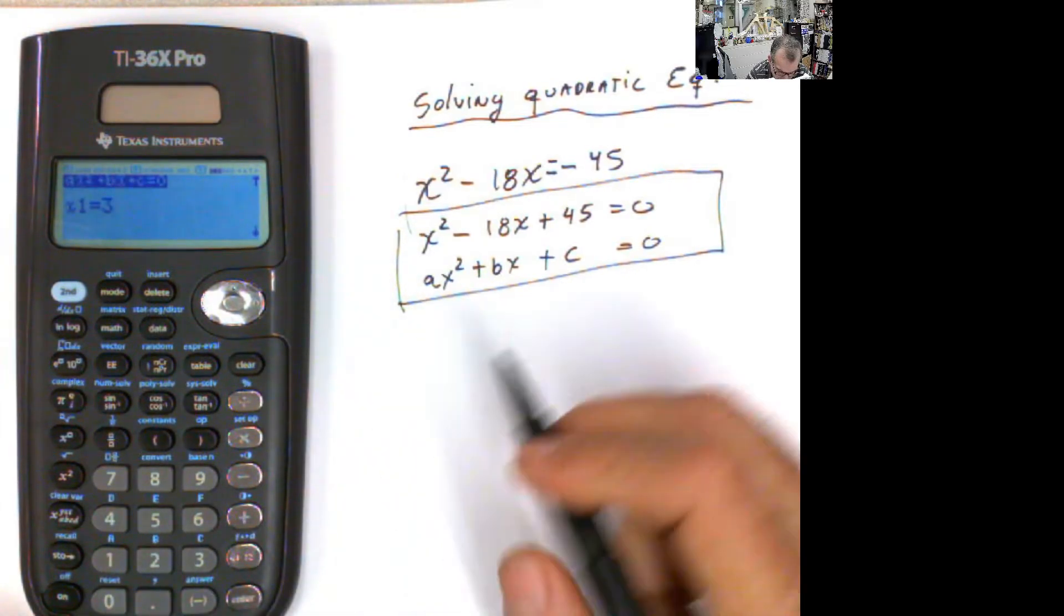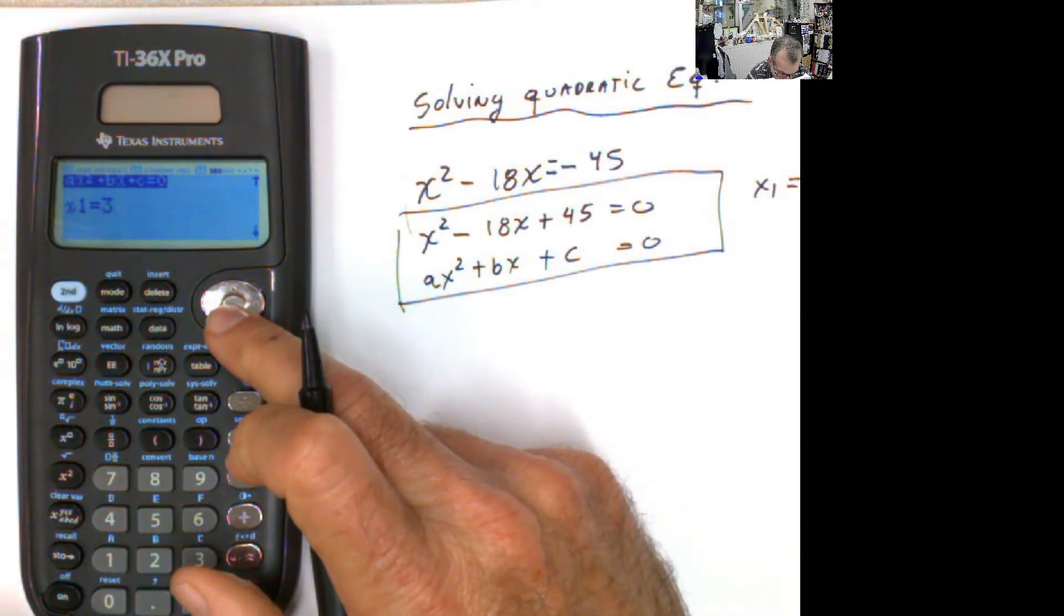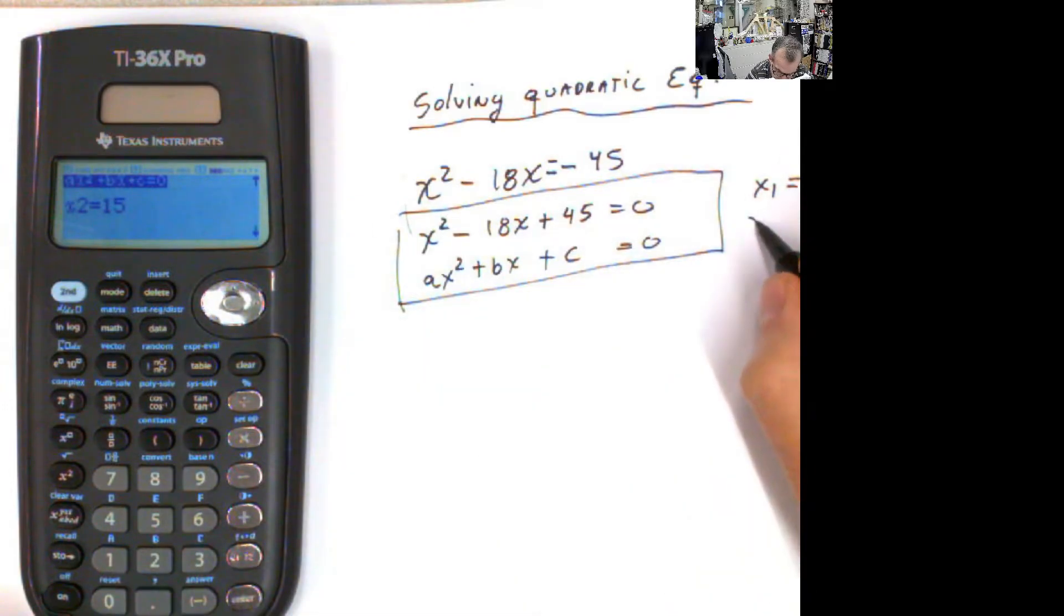And then you hit solve. So you get x1, the first root is 3. And you hit Enter again, or you go down with this, the same thing. And the second root is 15.